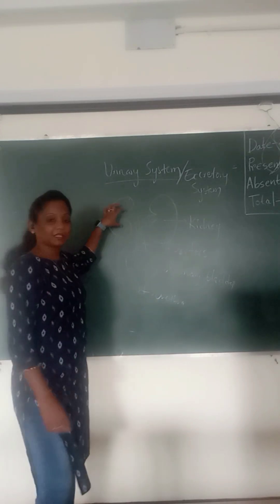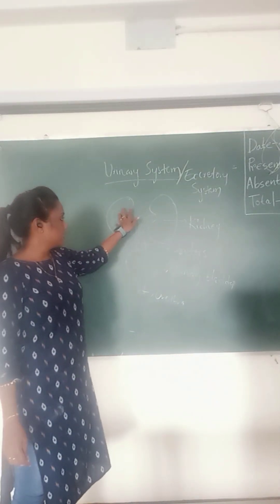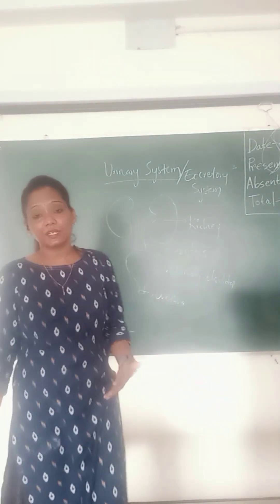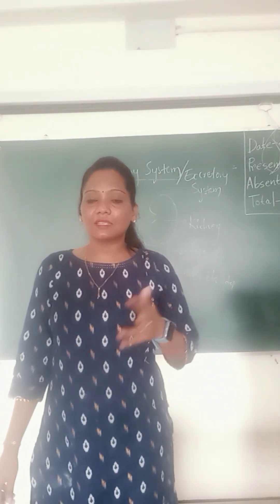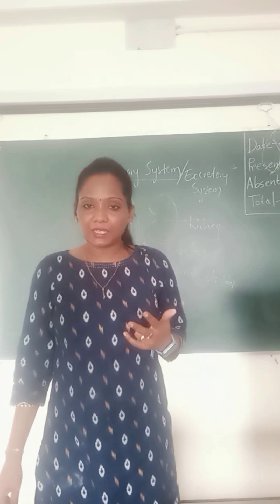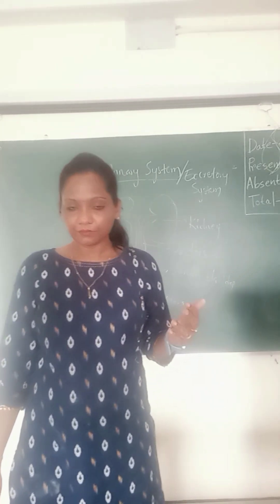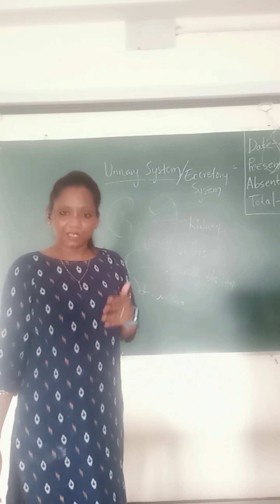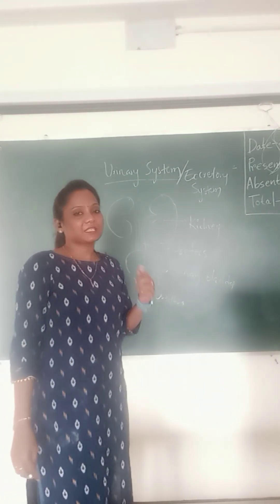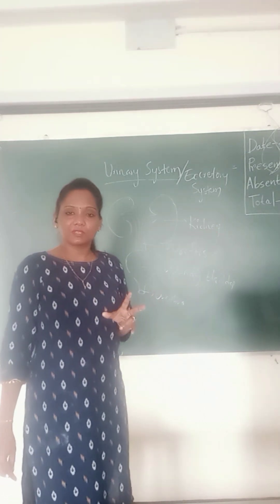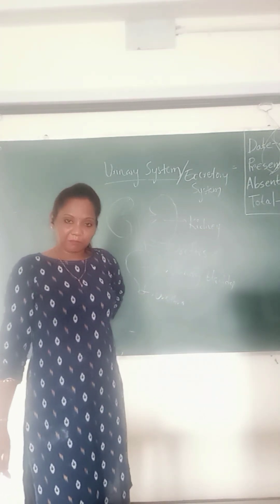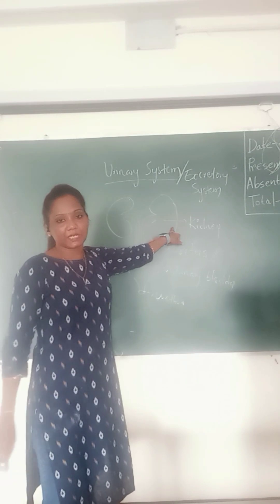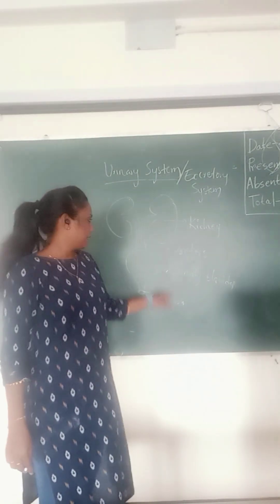When we speak about the kidneys, they are bean-shaped and brown in color. They are located in the posterior aspect on either side of the vertebral canal, just below the 12th rib. They are located in the lumbar region, on either sides you can see the kidneys located in the posterior aspect.